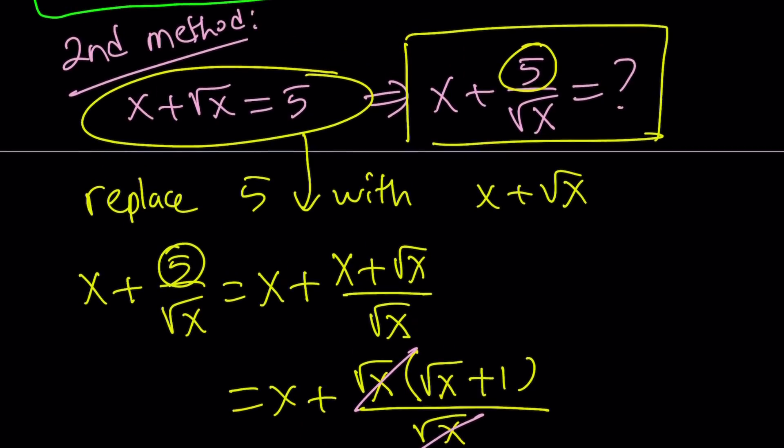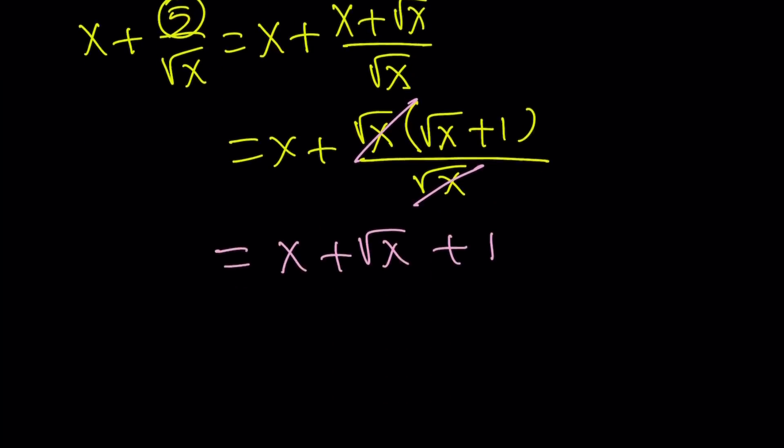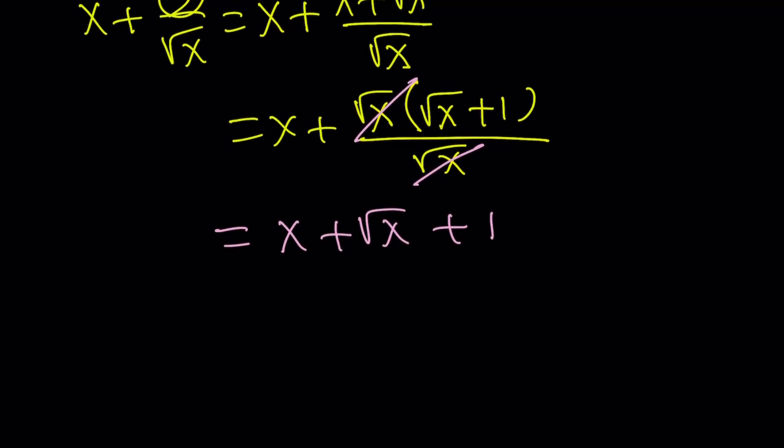But guess what? We already know x plus square root of x equals 5. So it has a numerical value. Therefore, I can just replace x plus root x with 5. And this gives me 5 plus 1, which is 6 as the answer. And this brings us to the end of this video.